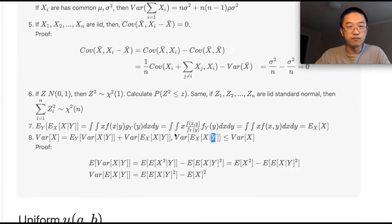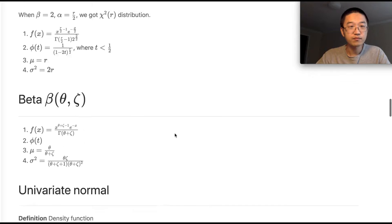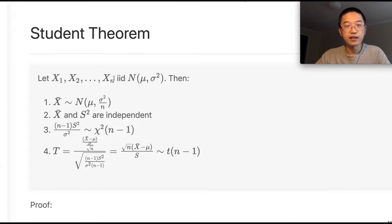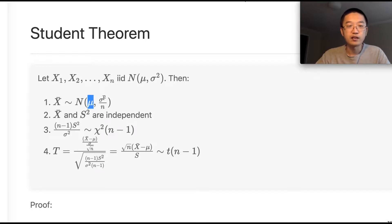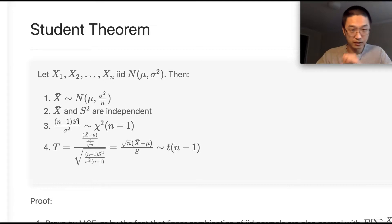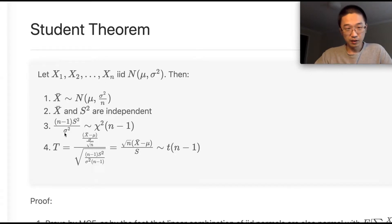Next is Student's theorem. If X₁ to X_n are i.i.d. normal with mean μ and variance σ², then: (1) the sample mean has a normal distribution with mean μ and variance σ²/n; (2) the sample mean and sample variance are independent; and (3) the sample variance times (n−1) divided by σ² is chi-square distributed with n−1 degrees of freedom.